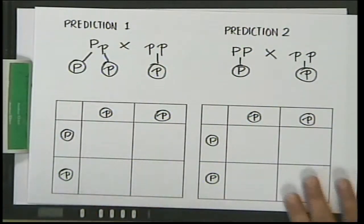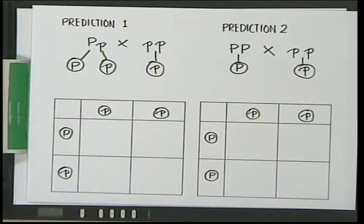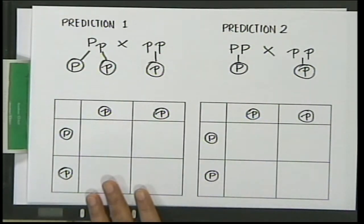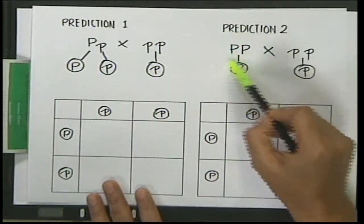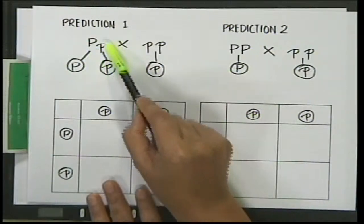A test cross is done when you want to identify the genetic constitution of a plant. Phenotypically you can observe flower color or seed shape, but genotypically you do not know what genes that plant carries. For example, if you find a pea plant with purple flower color, there are two possibilities: it could be homozygous dominant (PP) or heterozygous (Pp) — both produce purple flowers.